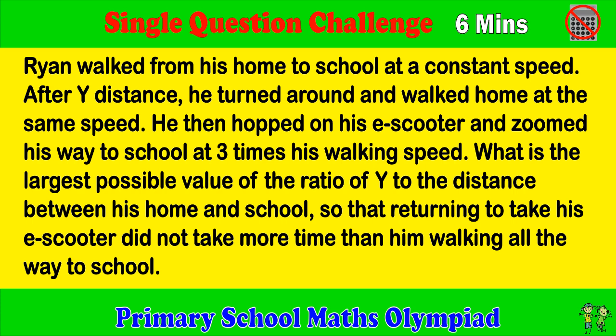Ryan walked from his home to school at a constant speed. After y distance, he turned around and walked home at the same speed. He then hopped on his e-scooter and zoomed his way to school at 3 times his walking speed. What is the largest possible value of the ratio of y to the distance between his home and school, so that returning to take his e-scooter did not take more time than him walking all the way to school?